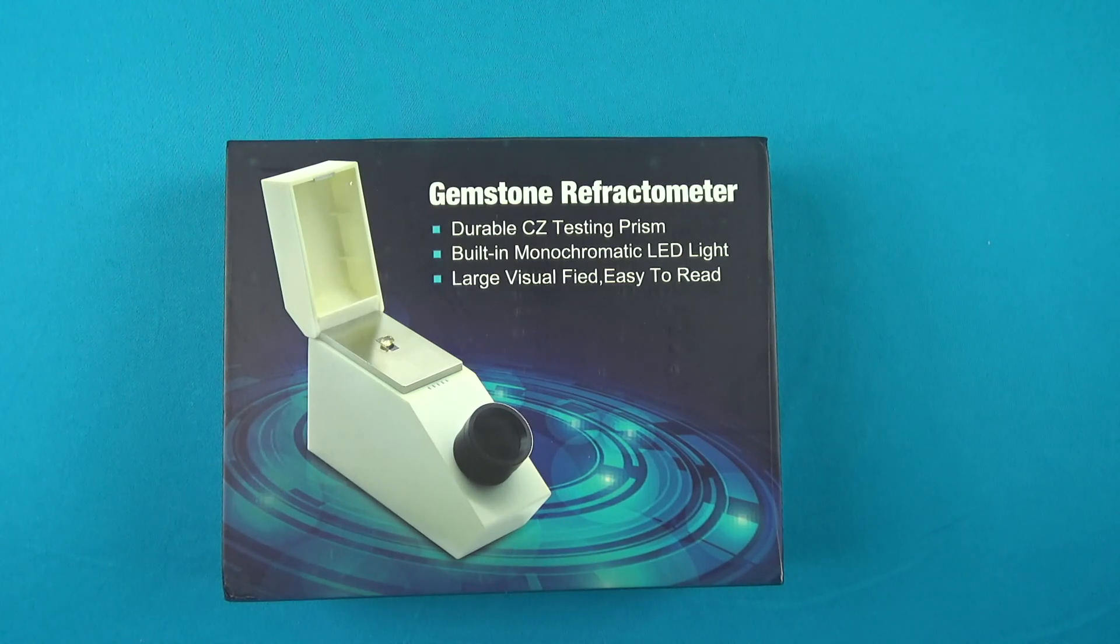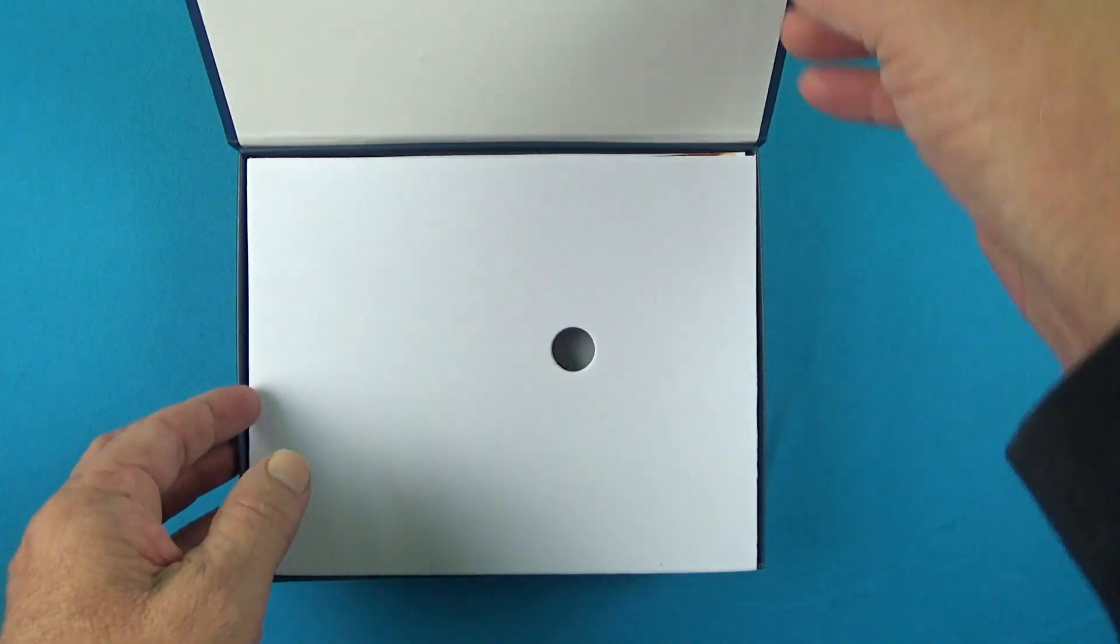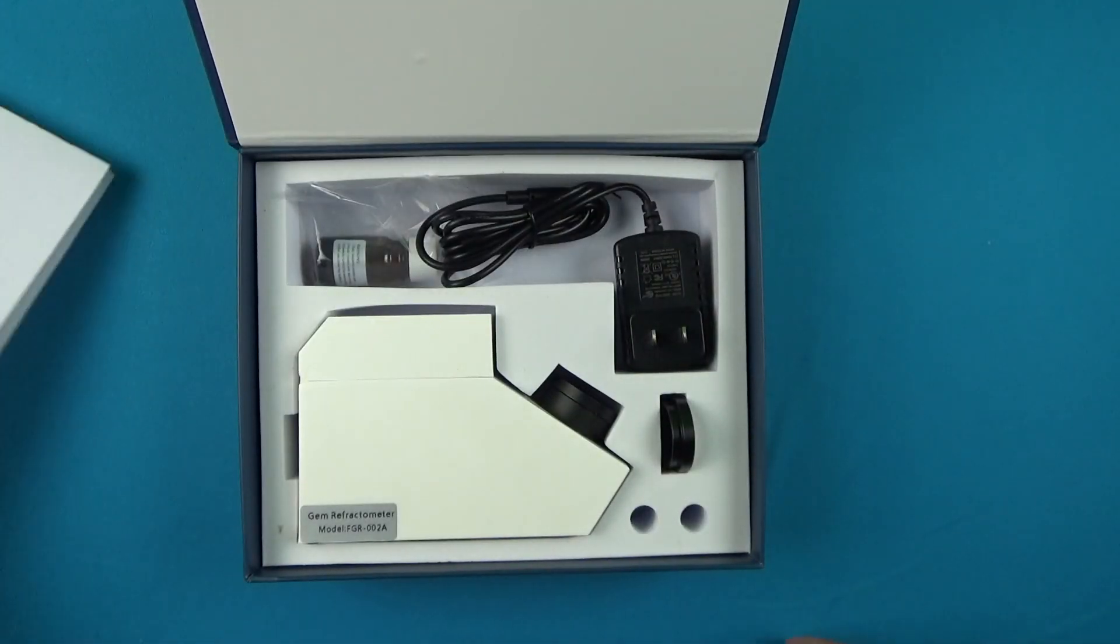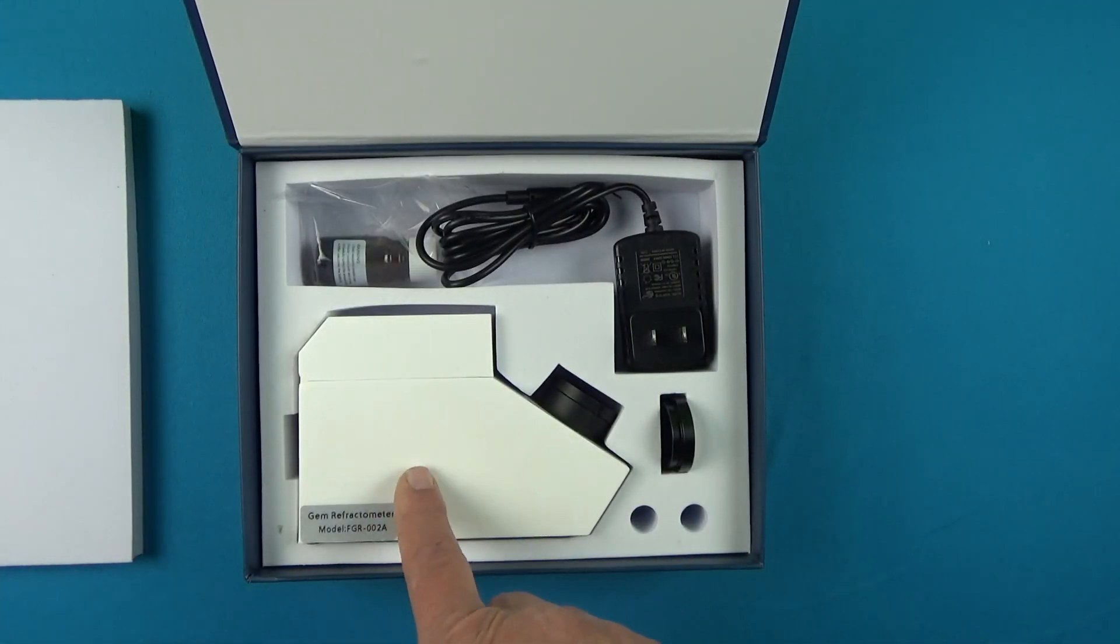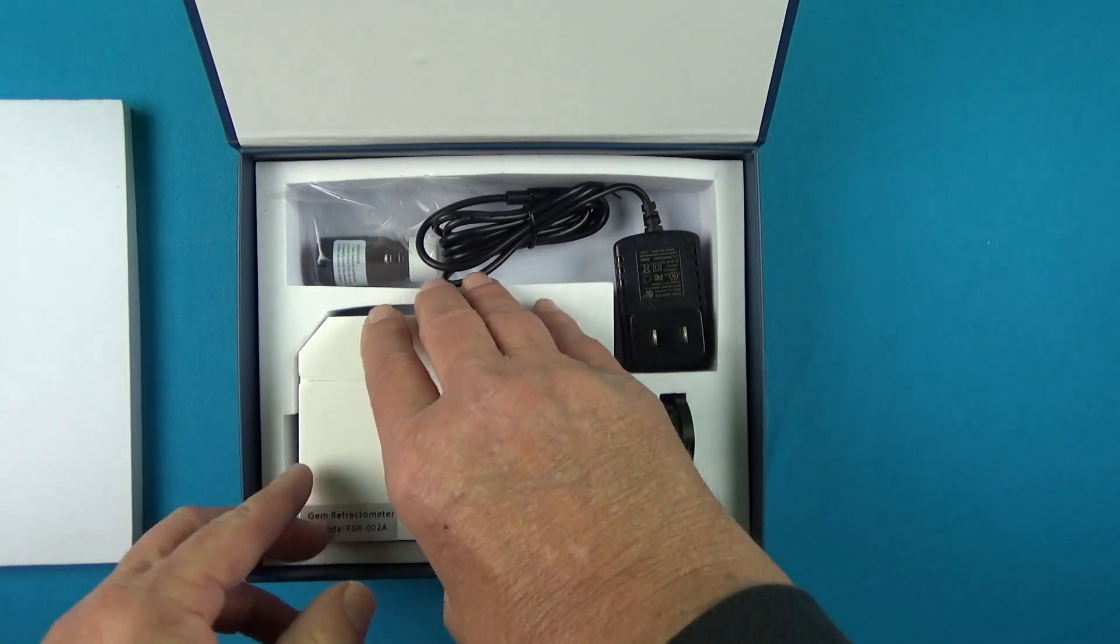When you first open your refractometer, double check that everything is inside. The box is well padded, so when you get your refractometer, you'll find the refractometer itself, your polarizing filter, your refractive index liquid, and of course your power cord.